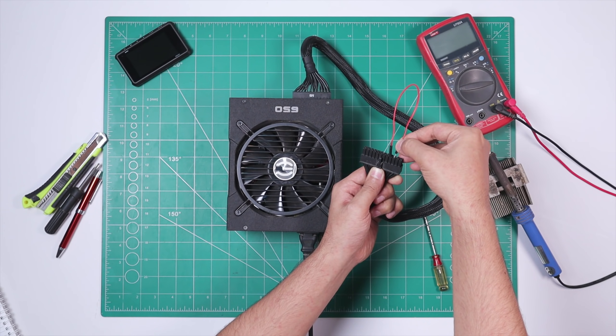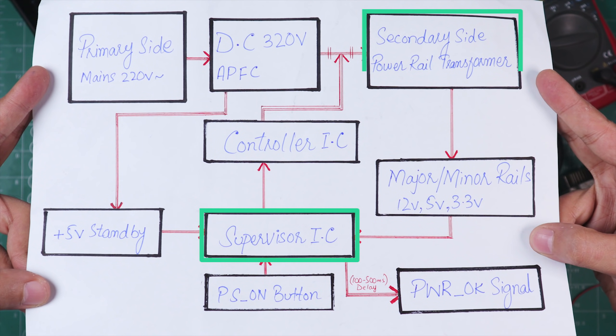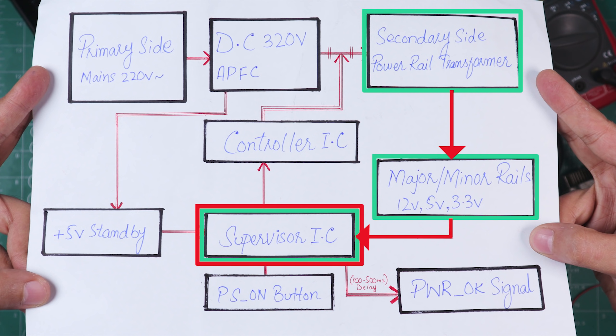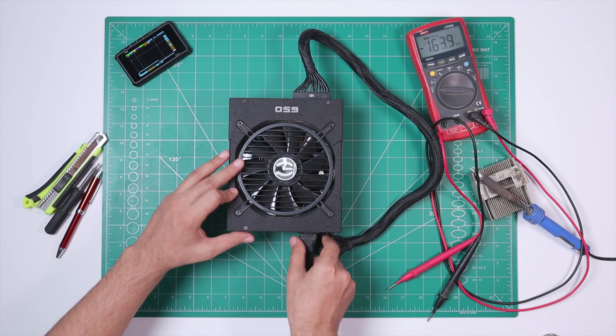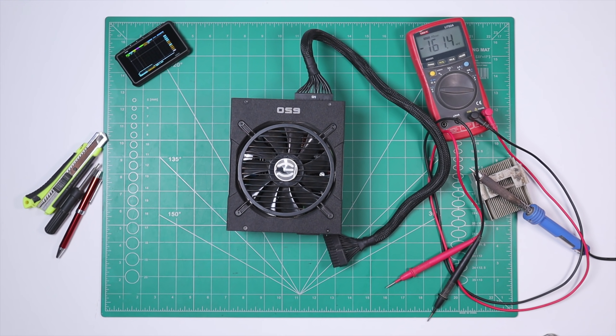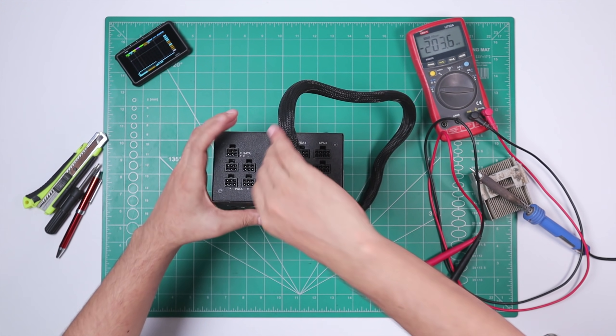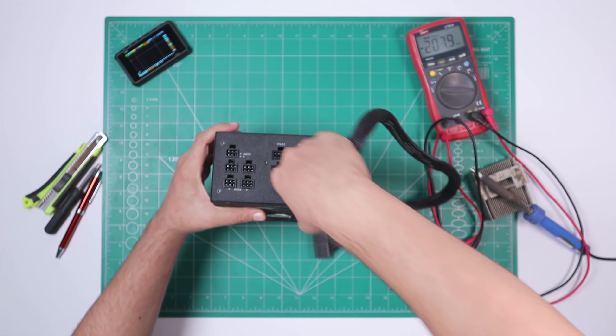And now if we get back to our power supply, it was turning on just for a second. That can mean that our supervisor IC is actually detecting some fault on the secondary side and that is why it's immediately shutting off the PSU. Now this boring theory has suddenly started to make sense, right? So this simply means that our primary side is actually working fine. We only have problem in our secondary side.